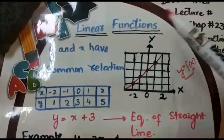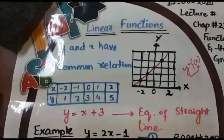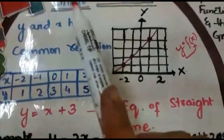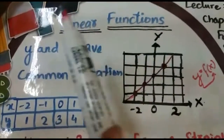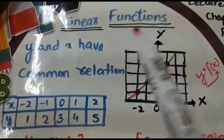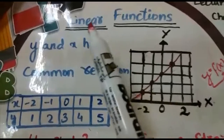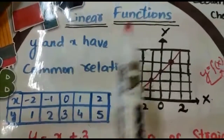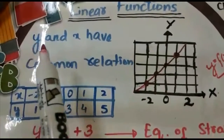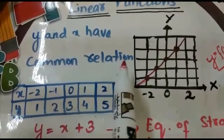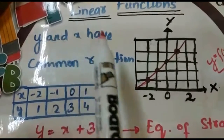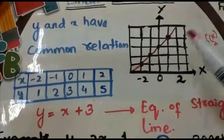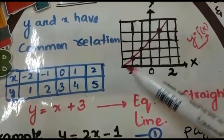Now we are going to start from linear functions. In a linear function there is a specific property — that's why they are called linear. The property is that y and x have a common or fixed relationship.